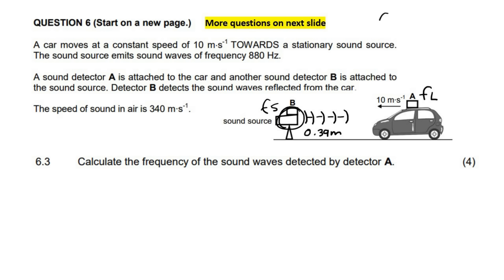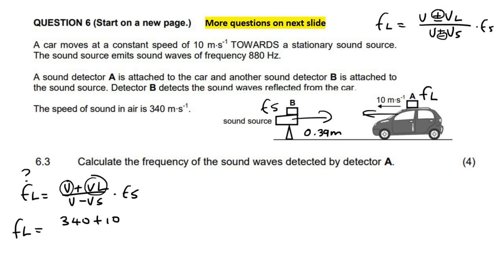They want to know what is the frequency that the listener, which is this vehicle, because this is the source and this would be the listener. In the formulas, frequency listener equals V plus minus V listener over V plus minus V_s times F_s. What I've told you guys before is, if the two objects are moving towards each other, whether it's the vehicle that's moving or the source, it doesn't matter. As long as these two objects are going towards each other, put a plus at the top and a minus at the bottom. If they're moving away from one another, use a minus at the top and a plus at the bottom. We're going to use a plus at the top, a minus at the bottom. We know the velocity of the listener is 10, and we know the velocity of the source is 0, and the frequency of the source is 880. Easy peasy marks. So we can just say F_L is equal to 340 plus 10 over 340 take away 0, multiplied by 880.